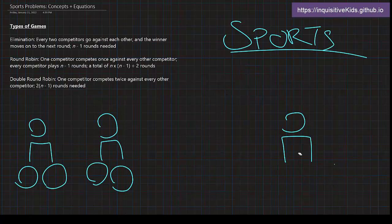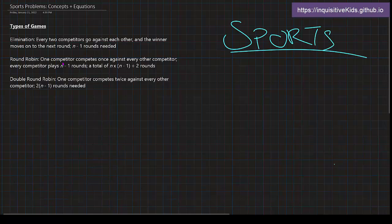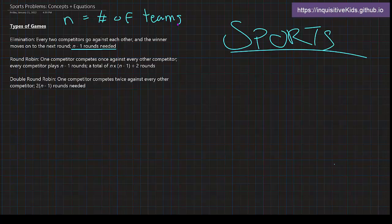An equation for that would be n minus one rounds needed, where n is the number of teams. So n minus one rounds would be needed in order to find the winner.